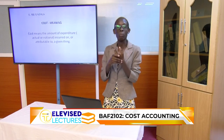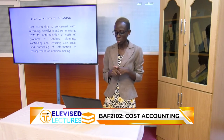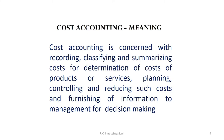Cost is the amount of expenditure incurred or attributable to a given thing — this can be a commodity in terms of a good or a service. In cost accounting, you take into account each and every material and labor you're going to use to produce a particular commodity. You record, classify, and summarize so that at the end of the day you can determine the total cost of a commodity.